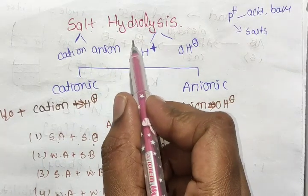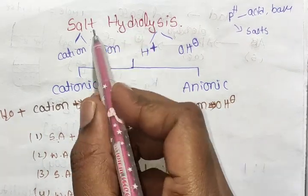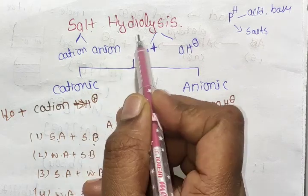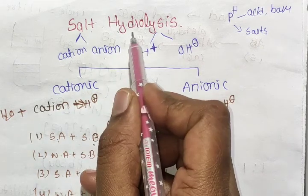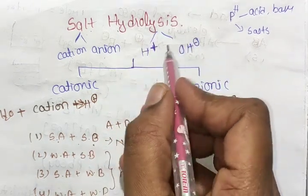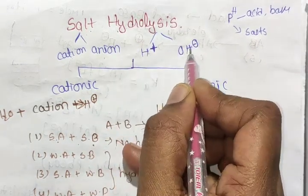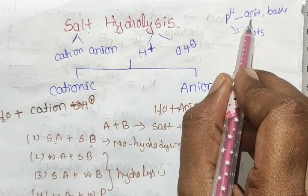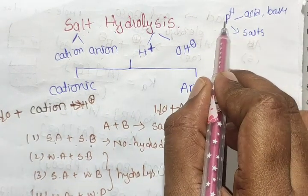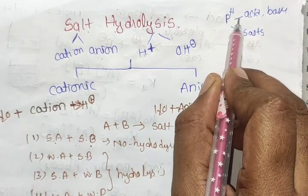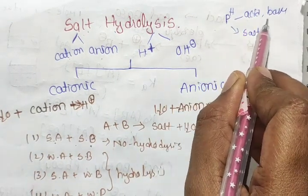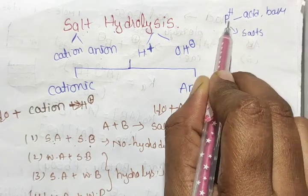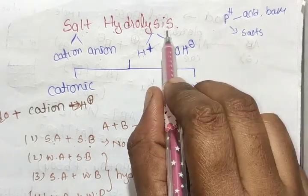Salt Hydrolysis. Salt means cation and anion. Hydrolysis means H₂O, i.e., water. In the buffer solution, pH value will be basic or acidic. In the same way, salt's pH means salt hydrolysis.